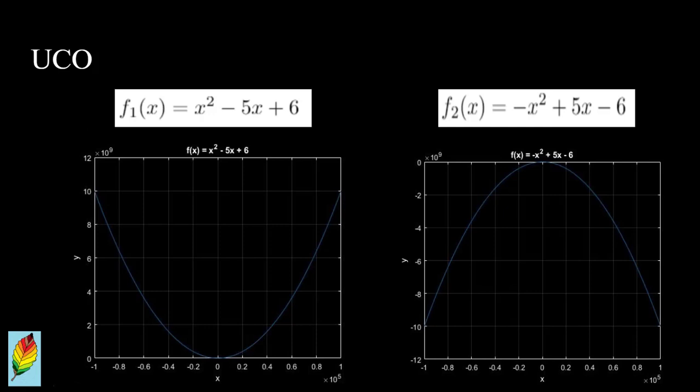To understand the principle of constraints, let us look at the functions f(x) = x² - 5x + 6 and f(x) = -x² + 5x - 6. For x² - 5x + 6, the minimum is -0.25, and for -x² + 5x - 6, the maximum is 0.25.